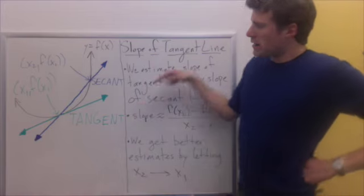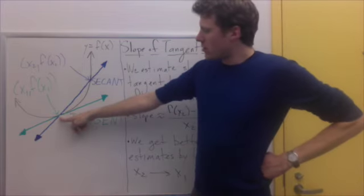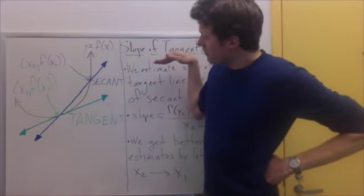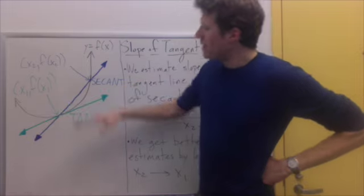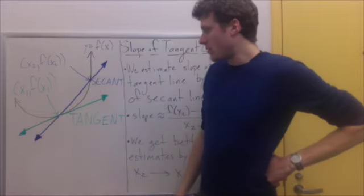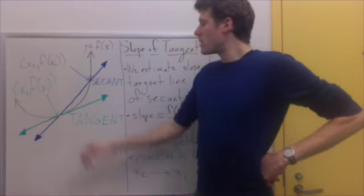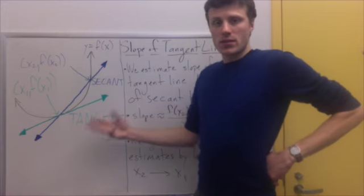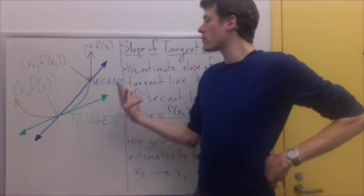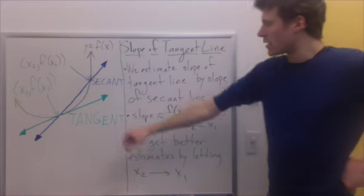The tangent line is the line that just comes and touches the curve just once at that point and doesn't really go through it — just hits that point and then keeps going. It looks like the curve at that point. We'd like to get the slope of the tangent line because that's what we are defining to be the slope of the curve. The slope of the curve is the slope of the tangent line, this green line right here.